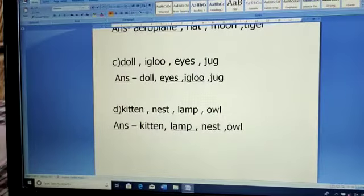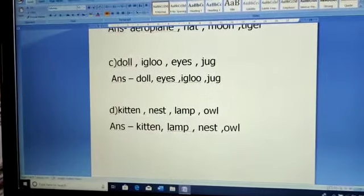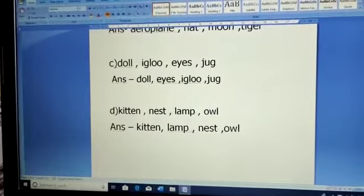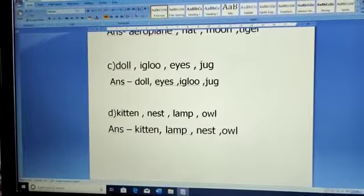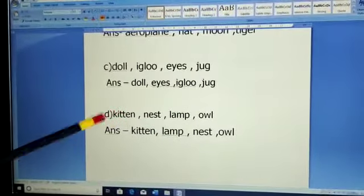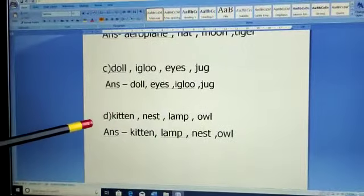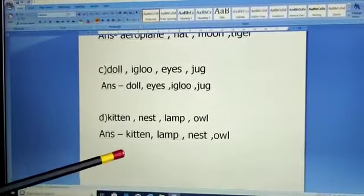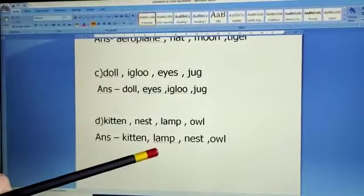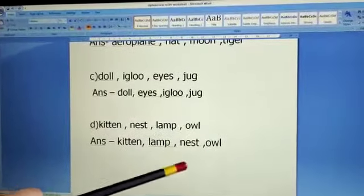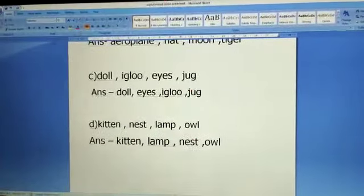Now read the alphabets A to Z. A, B, C, D, E, F, G, H, I, J, K. So K comes first in alphabetical order out of these. So kitten will be the first one, lamp will be the second one, third will be nest and fourth will be the owl.